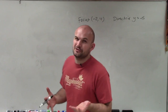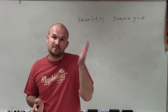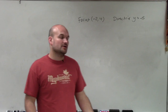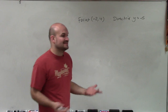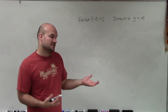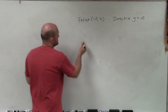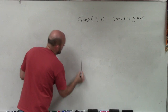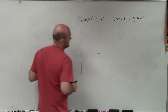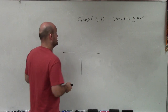The first thing I need to do is identify: is my axis of symmetry going to be vertical or horizontal? The only way I can identify that is by plotting the information that I have. Once I know if it is vertical or horizontal, then I can determine what type of equation I'm going to use.